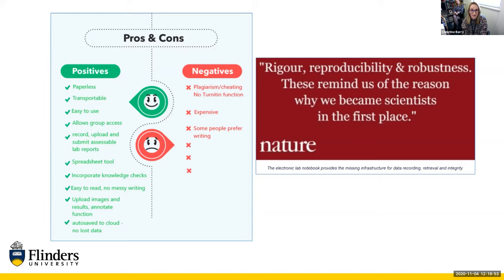In terms of negatives: there's potential for cheating without a Turnitin function — we use Turnitin in our LMS to identify similarity with other students' work or published work, and I wish that was integrated. I also consider that using LT purely as a virtual lab book could be expensive, since you wouldn't necessarily need all the modules and physiology aspects we use for other topics. And some people simply prefer writing and having a hard copy of their work.